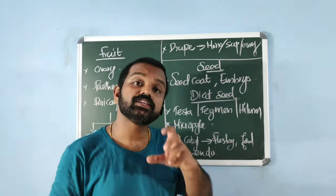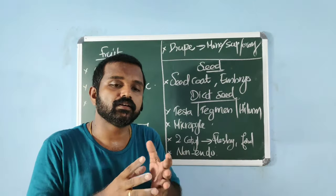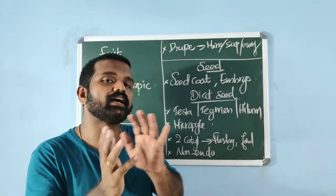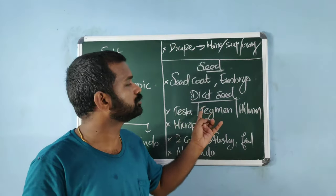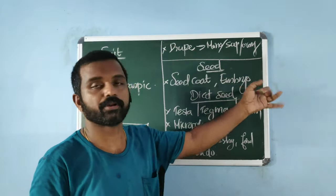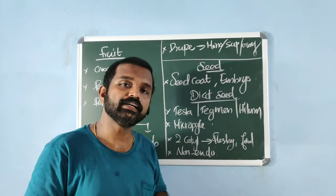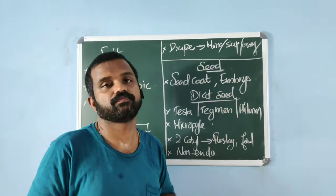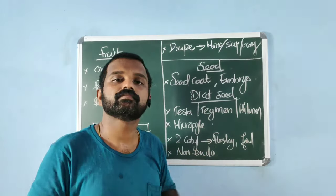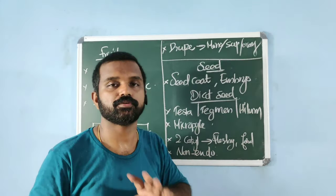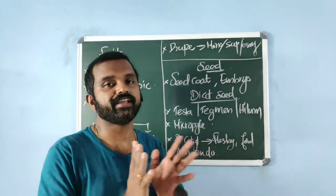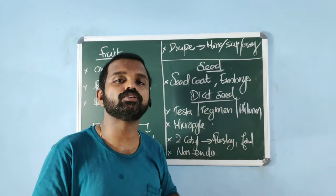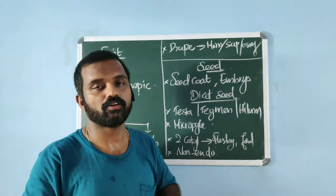A seed is a ripened ovule. The structure of a seed has two parts: seed coat and embryo. The embryo has an embryonal axis that includes the radicle, plumule, and cotyledons. There is a single cotyledon in monocots and two cotyledons in dicots.